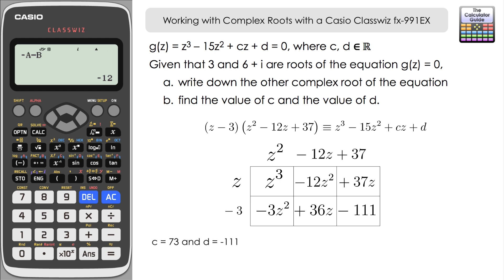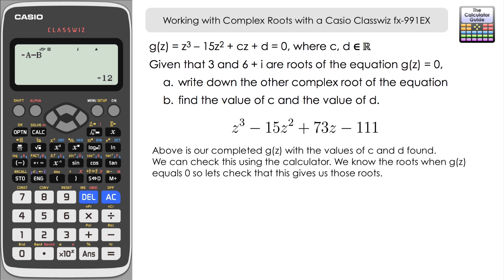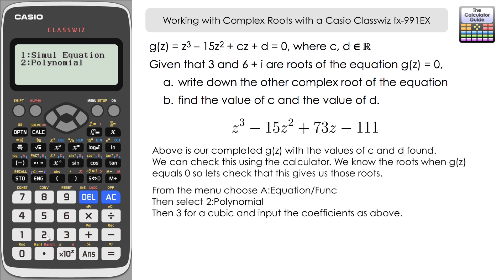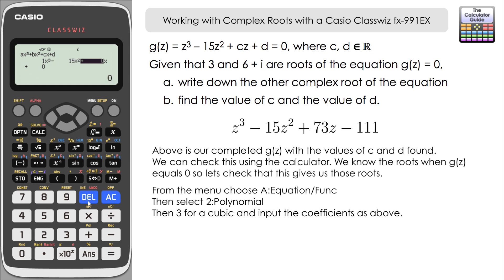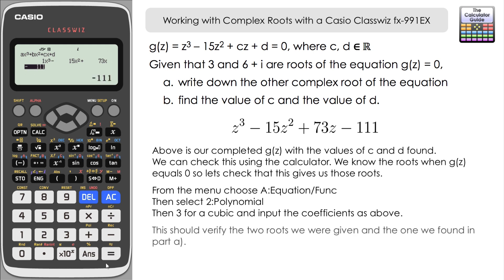We can use the calculator to verify this. From the menu we go to equation/function, choose polynomial degree 3, and input 1 for X cubed, minus 15 for X squared, plus 73 for X, minus 111. Pressing equals gives the roots: real root 3, first complex root 6 plus i, and second complex root 6 minus i — confirming that our cubic is correct and that C and D are right.